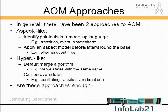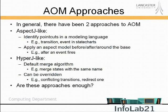In the AspectJ-like approach, people try to take AspectJ concepts — point cuts and before, after, and around advices — and do the same thing at the modeling level on UML models. For example, if you were doing this for state charts, you'd ask what the point cuts are. They might be transitions, and that's where you're allowed to insert or modify behavior. So every time a transition fires, you can insert something before, after, or around that transition.